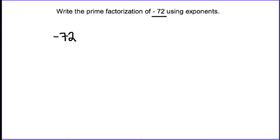The main difference between this question and the previous one is that the number we're trying to prime factorize is negative, so we're going to address the negative part right away. Our very first split is going to be negative one times 72 — this allows us to turn the negative number into a positive number down here.